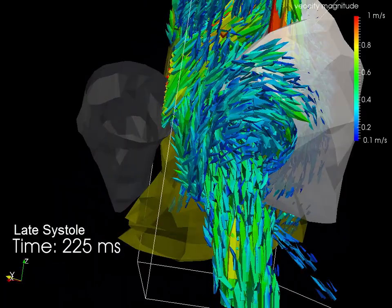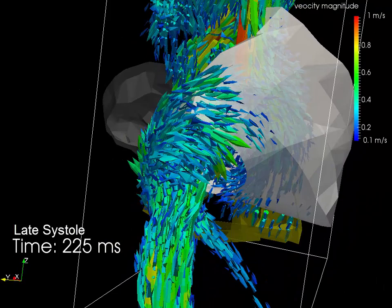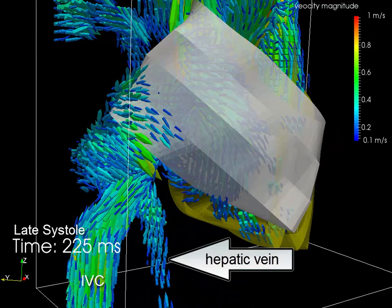We can see flow entering from the bottom through the inferior vena cava and the hepatic veins. The hepatic vein flow wraps around the inferior vena cava causing mixing.